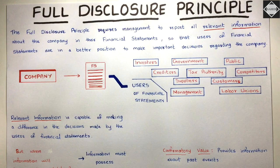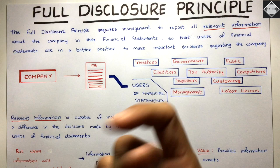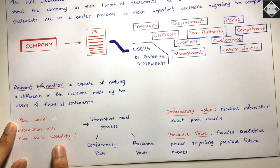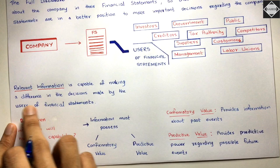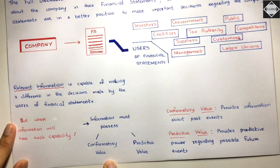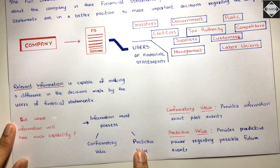Now you might ask: when will information have the capability of making a difference in the decisions made by users of financial statements? It's really simple. Information will have that capability when it possesses confirmatory value or predictive value, or both.